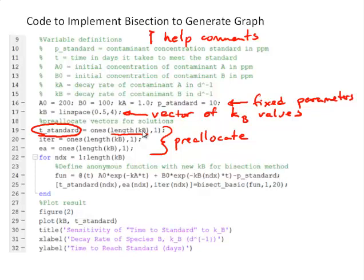Then all we need to do is use a for loop with a counter index that goes from 1 to the length of KB. And we're going to go through each value of KB.